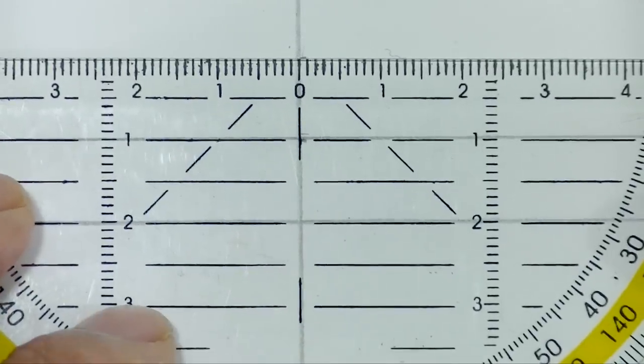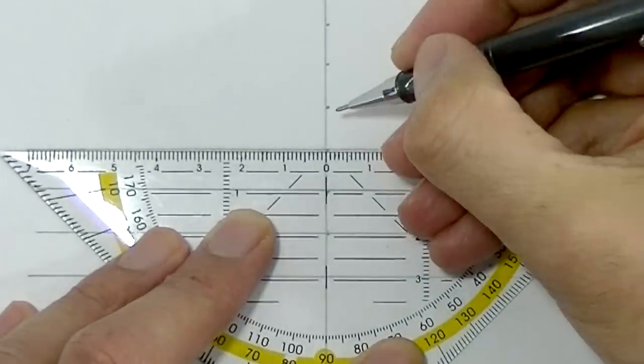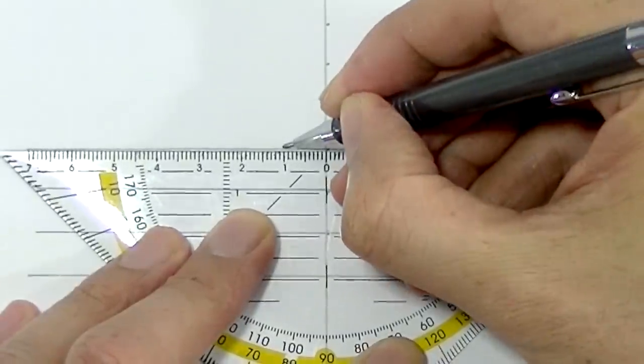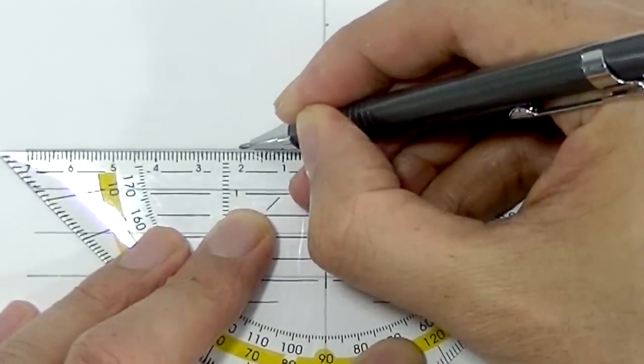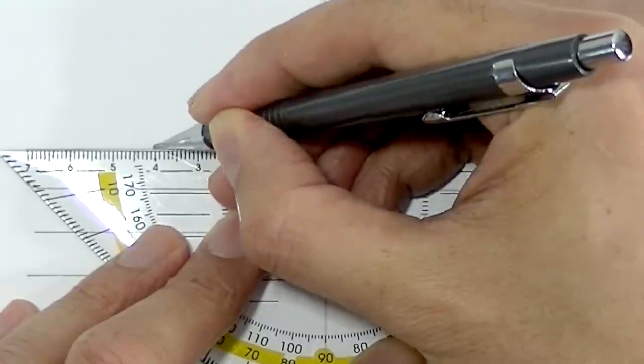I'm using a triangular ruler which has lines on it so I can space the lines evenly apart from each other and make sure that the lines are perpendicular to each other.